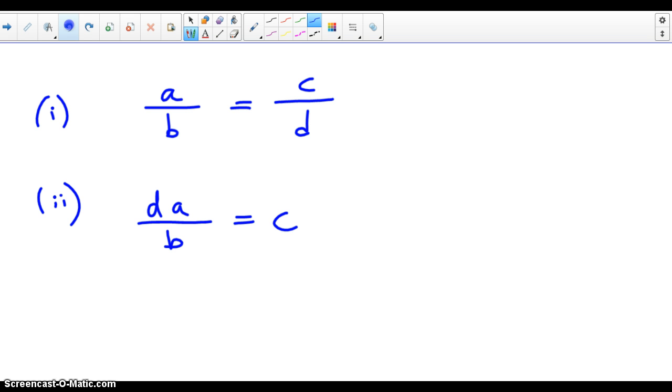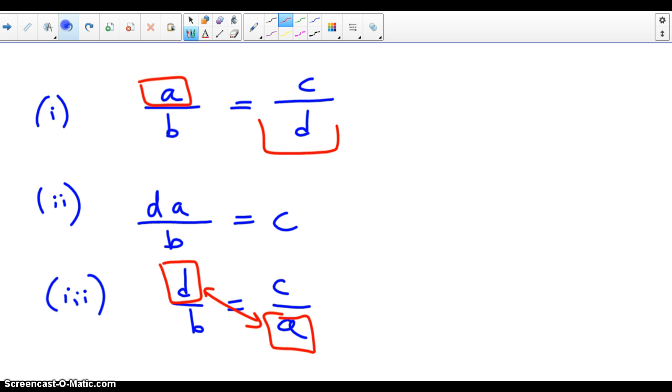Now, I can take this ii statement and modify it further. I'm going to take a and move it to the other side. And it's going to go down to the denominator. And I'll have d over b equals c over a. So look at what's happened here. I've flipped these two from how they were originally. And likewise, you're also allowed to flip b and c if you want to.